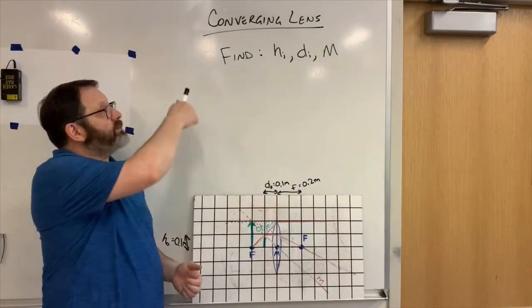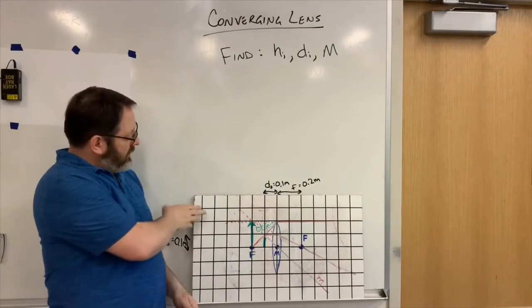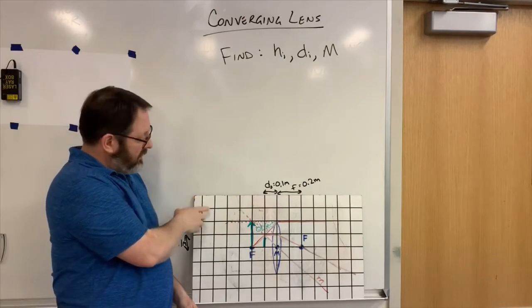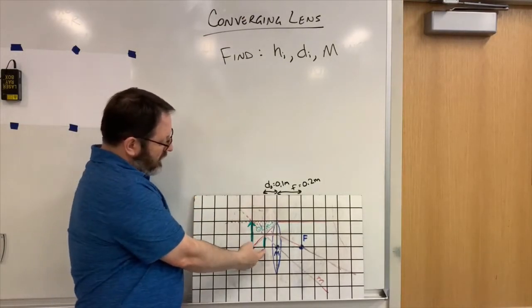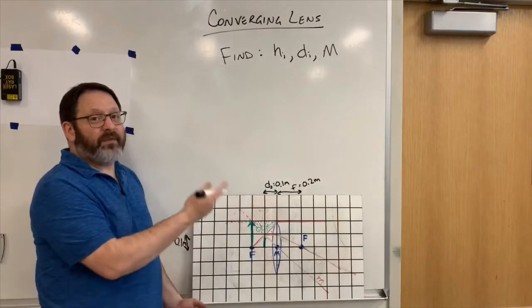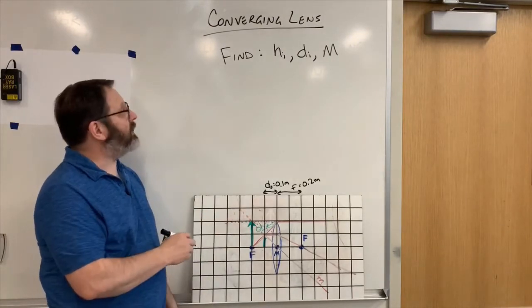Now we're going to try and use the equations for a converging lens. This is the exact same board that I just made the ray diagram for, starting with the object, ending with an image. Now we'll see if the equations agree with what I've drawn.